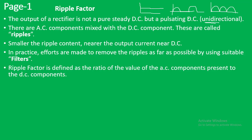It is clearly evident that these outputs are not a steady DC, but they are unidirectional, so we call them pulsating DC. The output of both half wave and full wave rectifiers is pulsating DC, meaning the output has both a DC component and an AC component mixed together. The AC component mixed with the DC component is named as the ripples, which are very much unwanted. Smaller ripple means the output is nearer to steady DC.